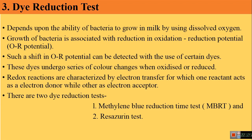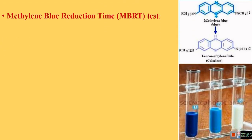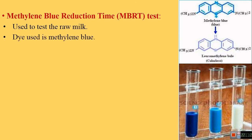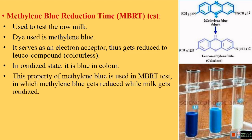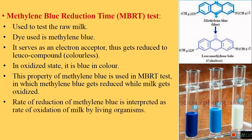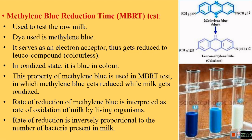We will discuss the MBRT test — the Methylene Blue Reduction Time test — which is particularly used to test the quality of raw milk. The dye used is methylene blue, which serves as an electron acceptor and gets reduced to a leukocompound, which is colorless. In the oxidized state, methylene blue is blue; in the reduced state, it is colorless. This property is used in MBRT, where methylene blue gets reduced while milk gets oxidized. The rate of reduction of methylene blue reflects the rate of oxidation of milk by living organisms, and the rate of reduction is inversely proportional to the number of bacteria present.